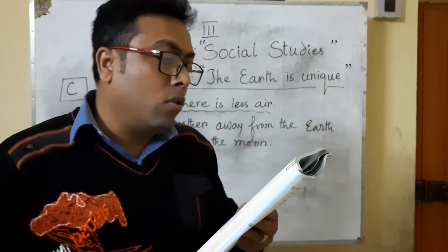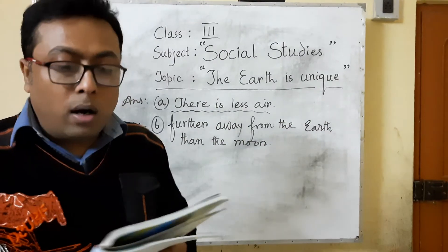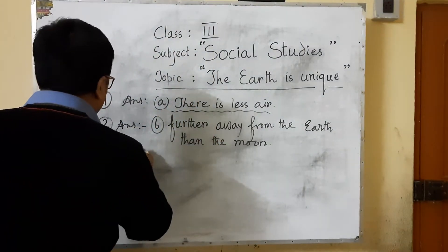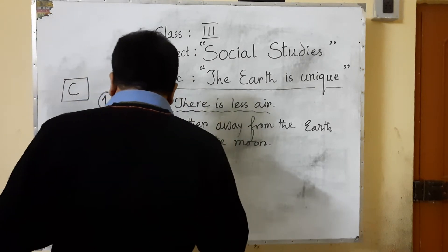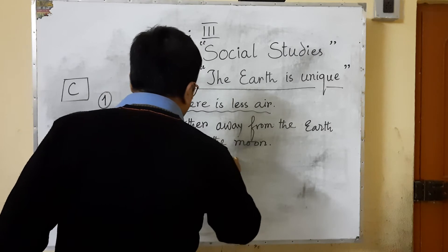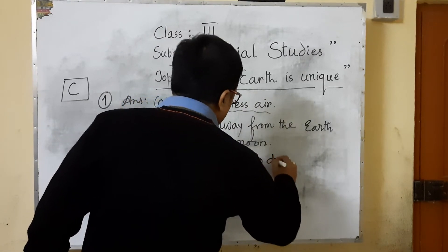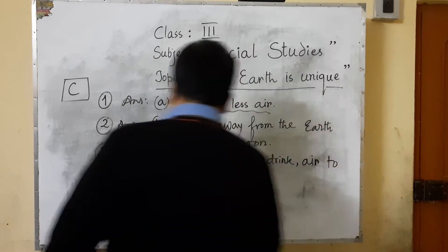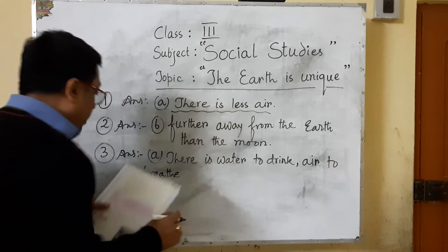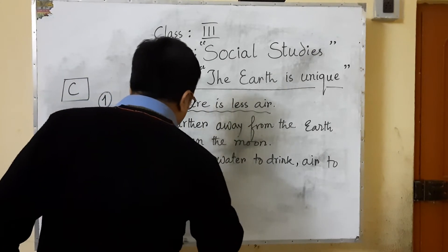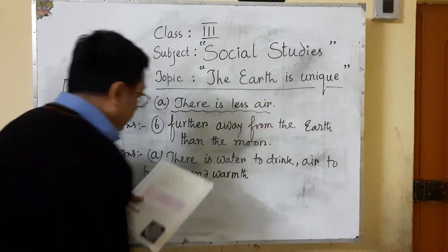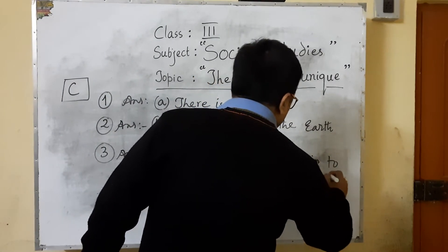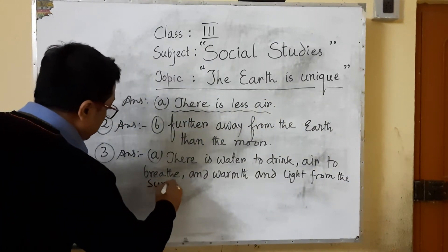Number three: life is possible on earth because there is water to drink, air to breathe, and warmth and light from the sun — or the sun gives out harmful rays? The answer is A: there is water to drink, air to breathe, and warmth and light from the sun.